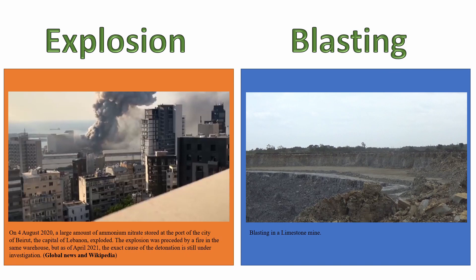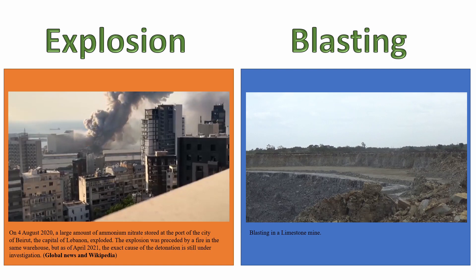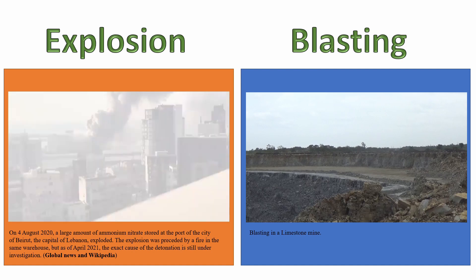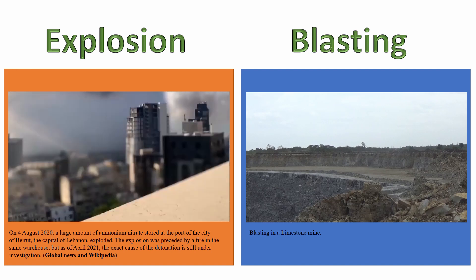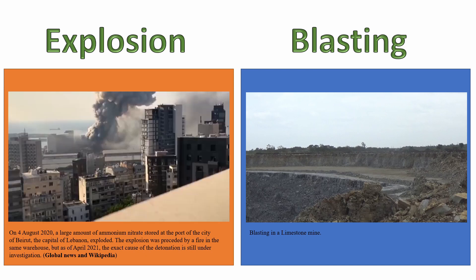Let's watch two videos. The first video occurred on 4th of August 2020. A large quantity of ammonium nitrate stored at the port city of Beirut, the capital of Lebanon, exploded. The explosion was preceded by a fire in the same warehouse, but as of April 2021, the exact cause of the detonation is still under investigation. In this video, ammonium nitrate explosives were stored in the warehouse and somehow fire caught, with the massive fire leading to detonation of the explosives.